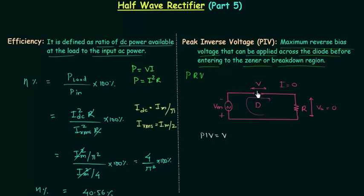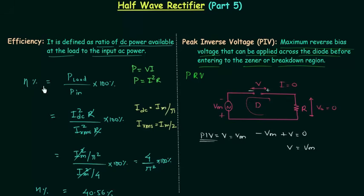I will calculate the peak inverse voltage by using KVL, Kirchhoff's voltage law. We have minus Vm plus V equal to zero, so V is equal to Vm. V is nothing but PIV, so peak inverse voltage is equal to Vm, the peak value of source voltage. There is one condition we have to follow: peak inverse voltage must be greater than or equal to Vm, because if peak inverse voltage is less than Vm, the diode will be damaged.